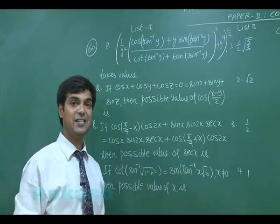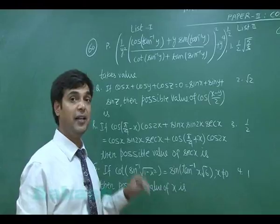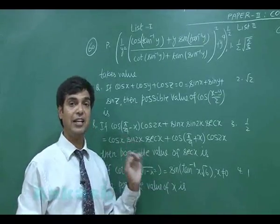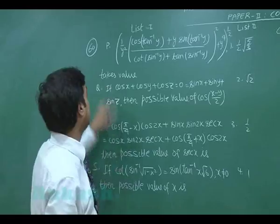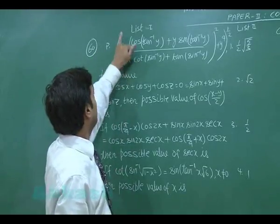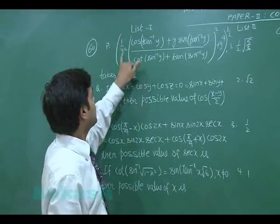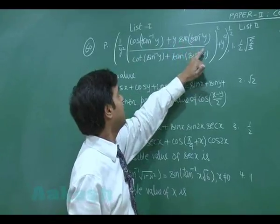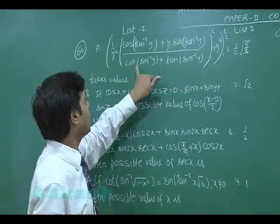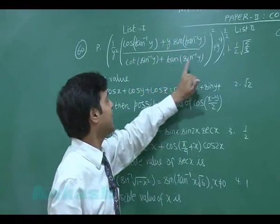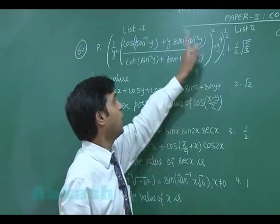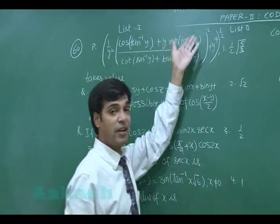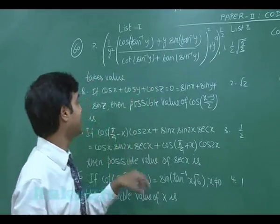Moving to the 60th question — the last question of Paper 2 of IIT JEE Advanced 2013. Part P: simplify the expression (1/y²)[cos(tan⁻¹y) + y·sin(tan⁻¹y)] divided by [cot(sin⁻¹y) + tan(sin⁻¹y)]², plus y⁴, all to the power of one half.